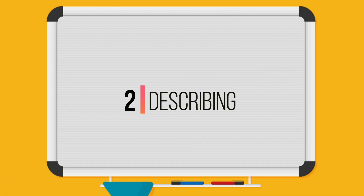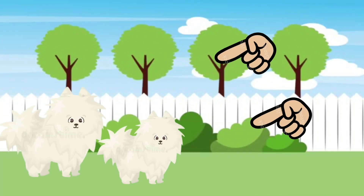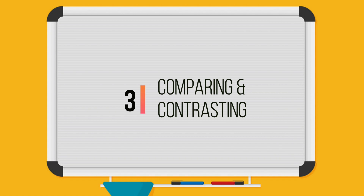Describing: telling something about the characteristics of objects or things. Example: those puppies have white fluffy hairs.